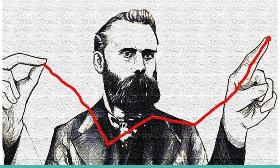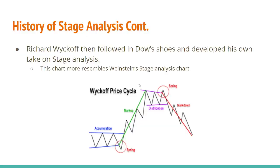Here's a picture of Charles Dow showing how a chart moves within the different stages. Next up we have Richard Wyckoff, who followed in Dow's shoes and helped develop his own take on stage analysis. Here's a picture of Wyckoff's price cycle — this chart more resembles Stan Weinstein's stage analysis chart. Instead of having six phases, now we have four. You can see they still have the same tenets: accumulation, markup, distribution, and markdown. This is just in four stages. And here's a picture of Richard Wyckoff — the nice round glasses, definitely looks like an intellectual man.